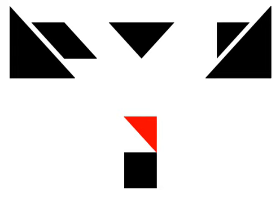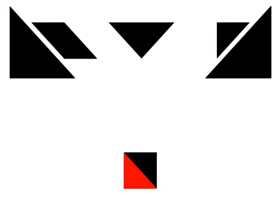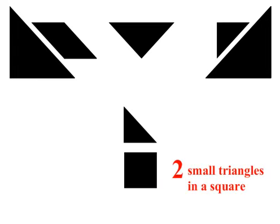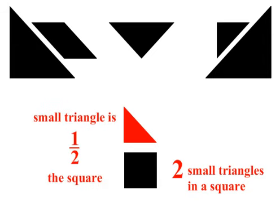Let's start with the square and a small triangle. The square can be covered with two small triangles, so the square is equal to two small triangles. There is only one small triangle, so we can make the fraction 1 over 2, or 1 half. The small triangle is 1 half the square.